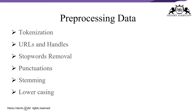Pre-processing is the most important and crucial step in the pipeline. The first sub-step is tokenization — feedback is written in sentences as unstructured data, so the sentence must be broken into words (tokens). After tokenization, we remove URLs, stop words, punctuation, apply stemming, lower casing, and so on.